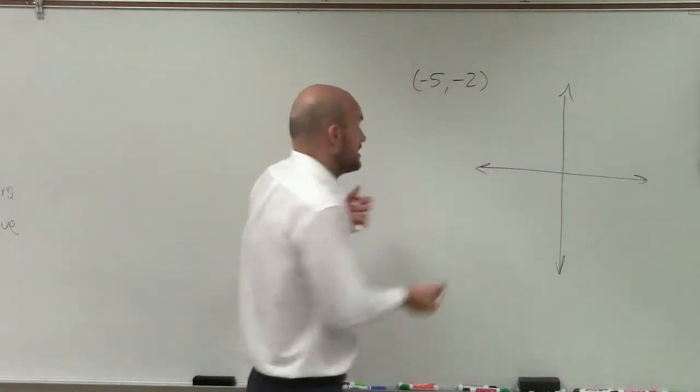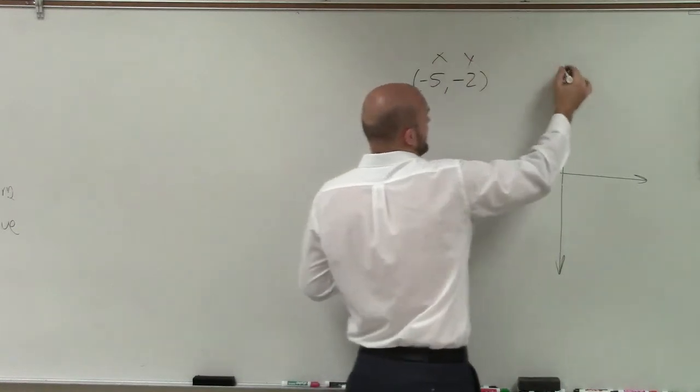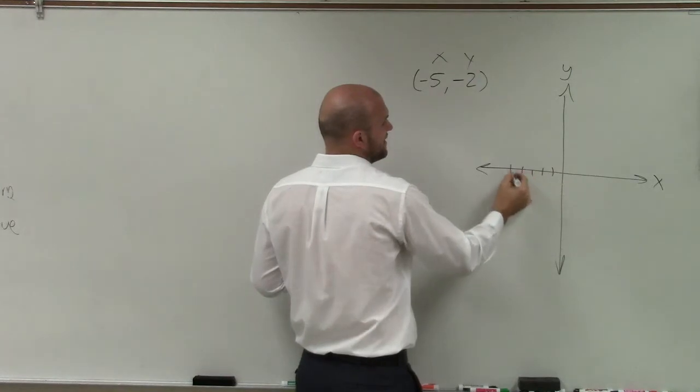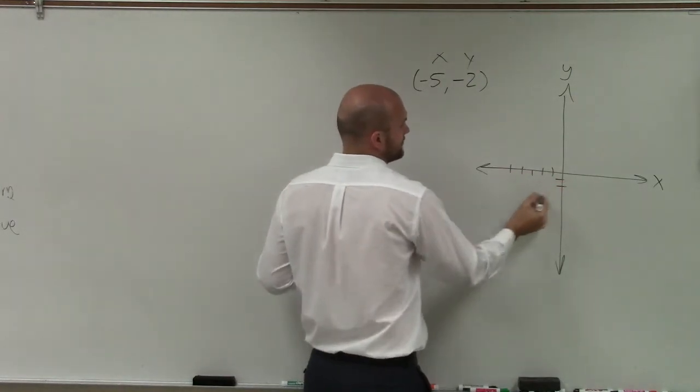So firstly, we have a coordinate point, right? And we know that coordinate point, x and y-axis, y-axis, x-axis. So I go and plot the point. Negative 5, 1, 2, 3, 4, 5. Negative 2, 1, 2. OK?